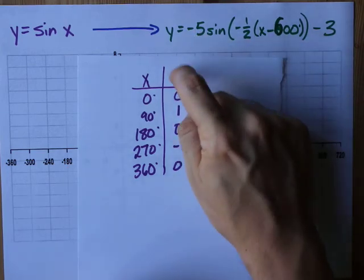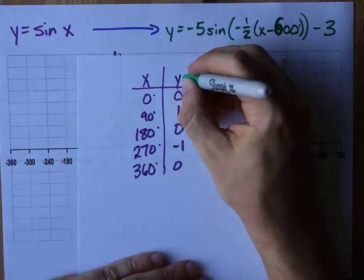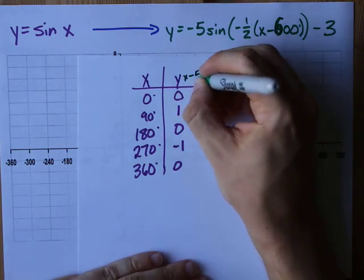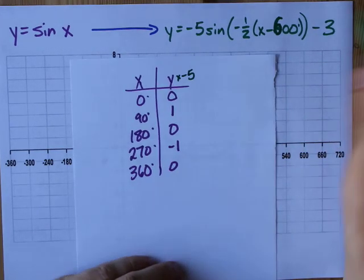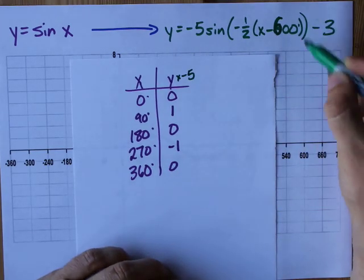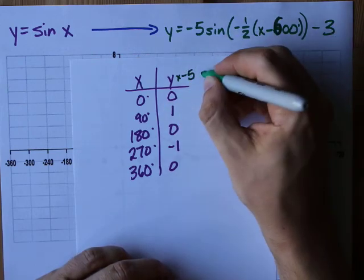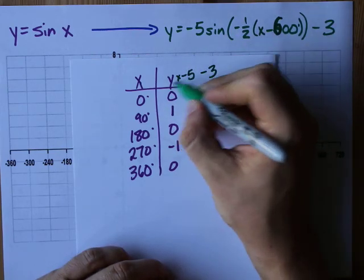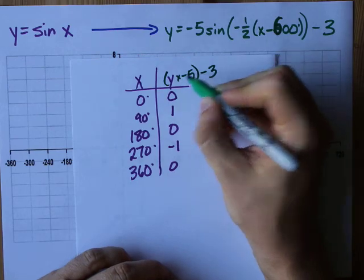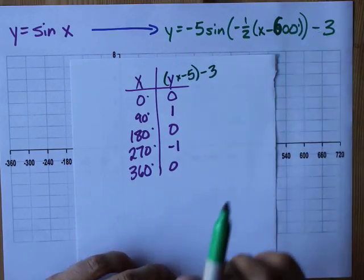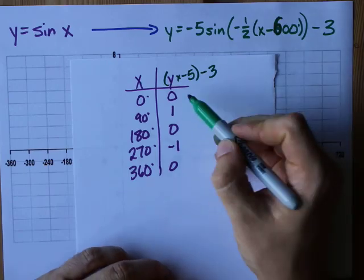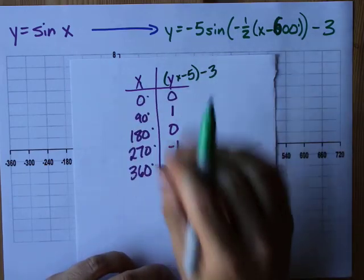The effect of a vertical stretch on the y's is you multiply those y's by that number. In this case, I'm going to multiply them by negative five. And then whatever the vertical shift is, this one's down three, you add or subtract that from the end. So I've got to take all my y's, I've got to multiply them by negative five for this. And I've got to subtract three for that. So I'm going to do that, and then I'll get to the horizontal stuff.